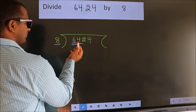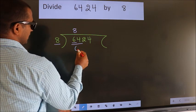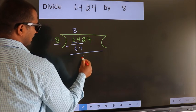When do we get 64? In 8 table, 8 8s, 64. Now, we should subtract. We get 0.